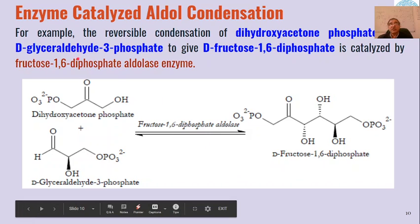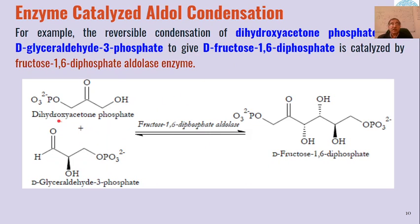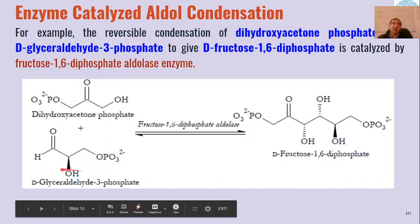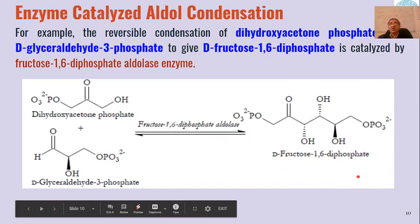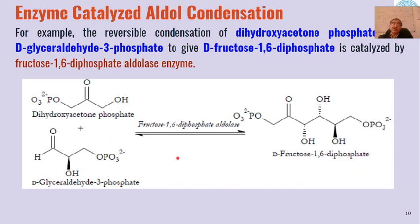An example of enzyme-catalyzed aldol condensation: dihydroxyacetone phosphate reacts with D-glyceraldehyde-3-phosphate in the presence of fructose-1,6-diphosphate aldolase to give an aldol product. The product formed is stereospecific — exclusively D-fructose-1,6-diphosphate, with no other product formed. This demonstrates that enzyme-catalyzed aldol condensation is highly stereospecific.